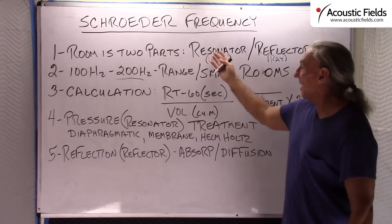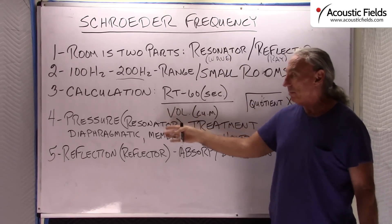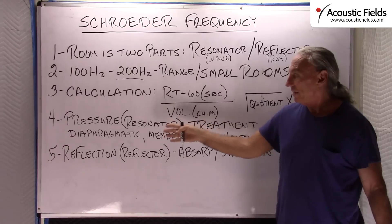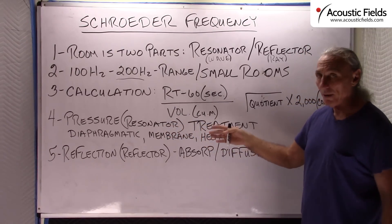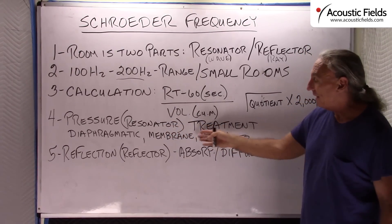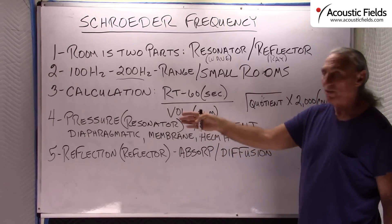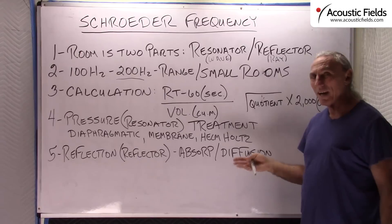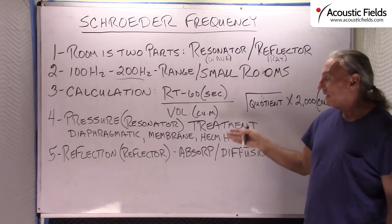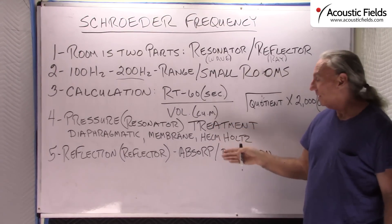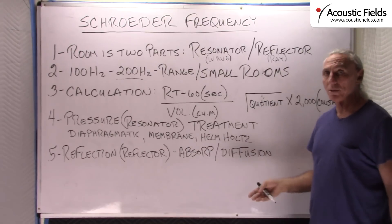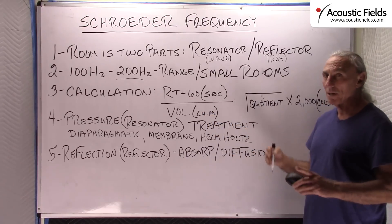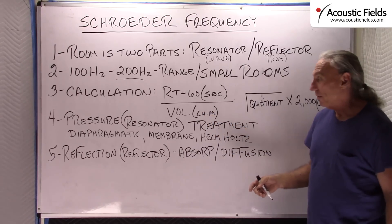For the resonator part — the wave or low frequency part of our room — what are we going to use for treatment? We have three options: diaphragmatic, membrane, and Helmholtz. Diaphragmatic is the most powerful; that's the one we use, and we've innovated a lot with our carbon technology. Membrane is the cousin of diaphragmatic — it can get as low, but not at the rates or level you really need in today's small rooms. Helmholtz is very frequency specific, narrow band in its absorption, while diaphragmatic is very broad band, so you can get more for your space requirement.